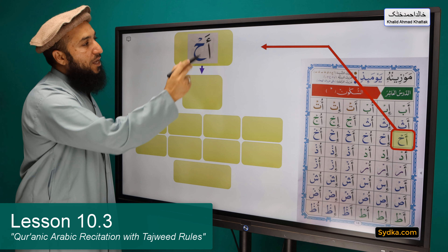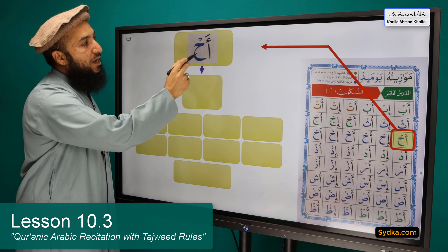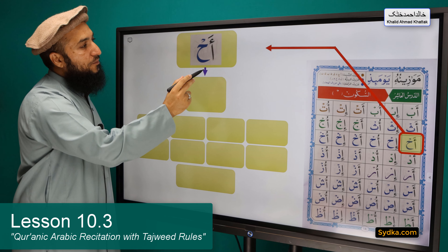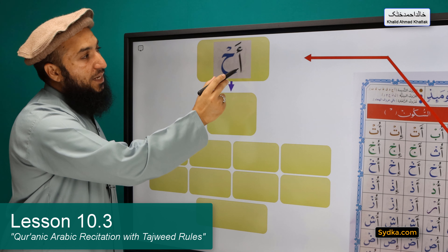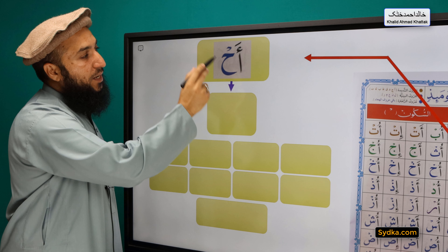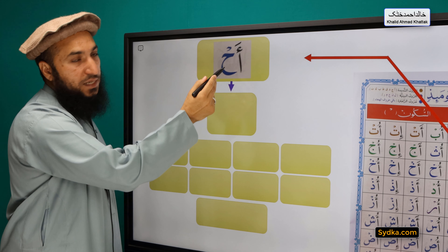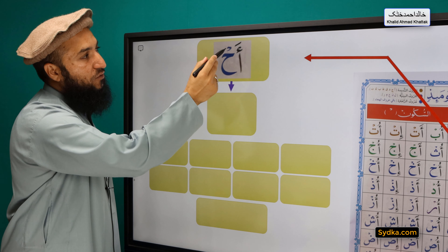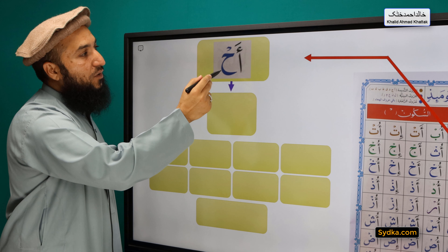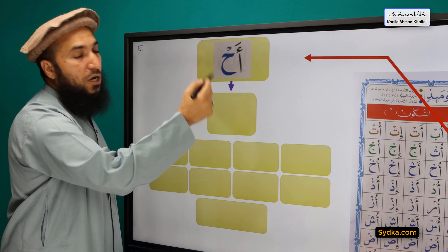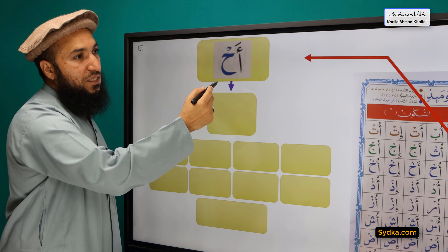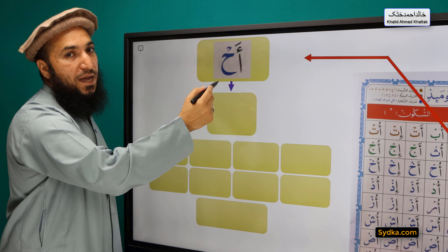The next syllable we have is Hamza, Fathah, Ha, Sikun. Hamza is a light letter. It has Fathah on top of it. It is followed by Ha, which is a light letter, and it has Dhumah on top of it. Ha doesn't have the property of Qalqala, so we can't pronounce it as 'Ah' — that would be wrong. So its correct pronunciation is 'Ah'.